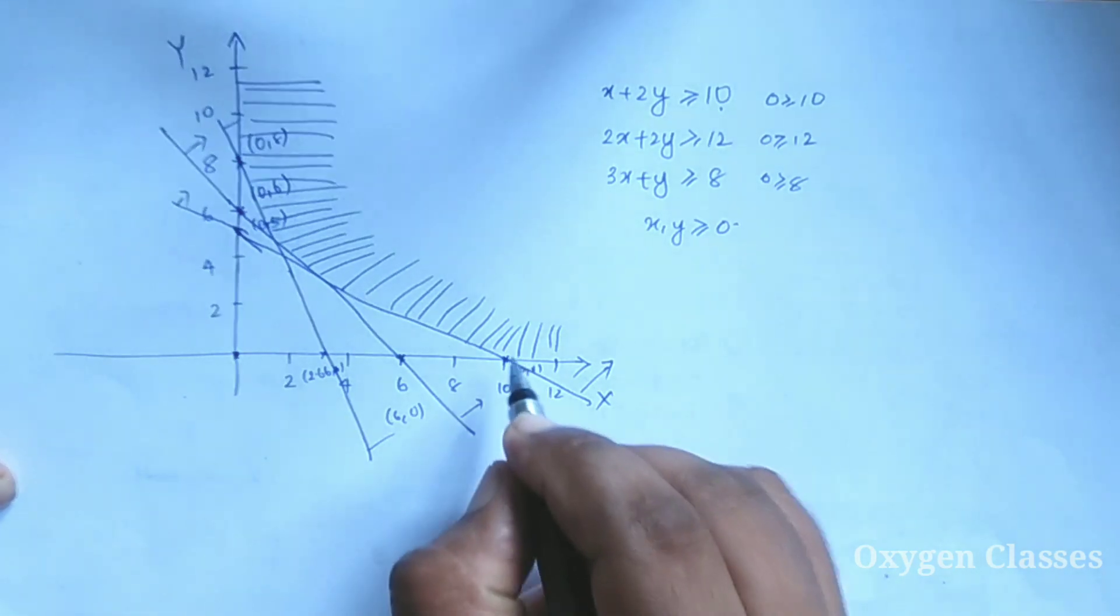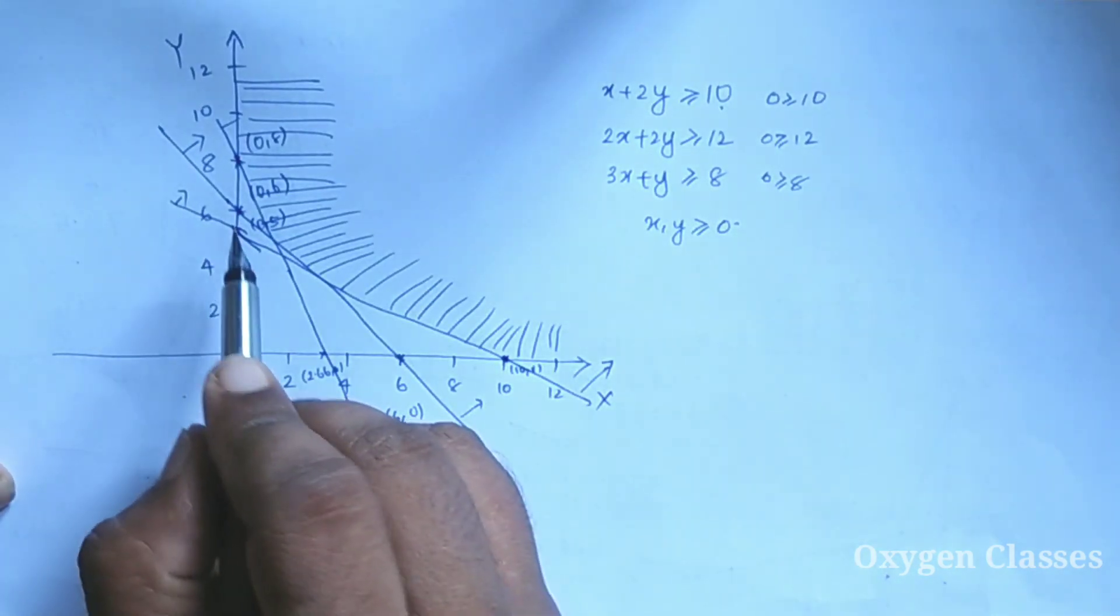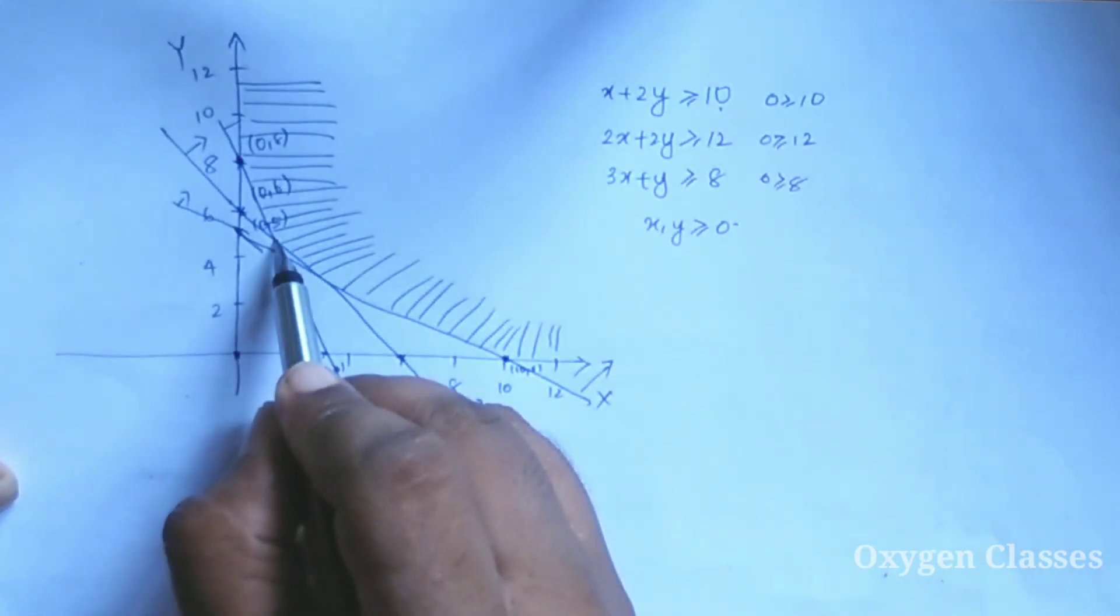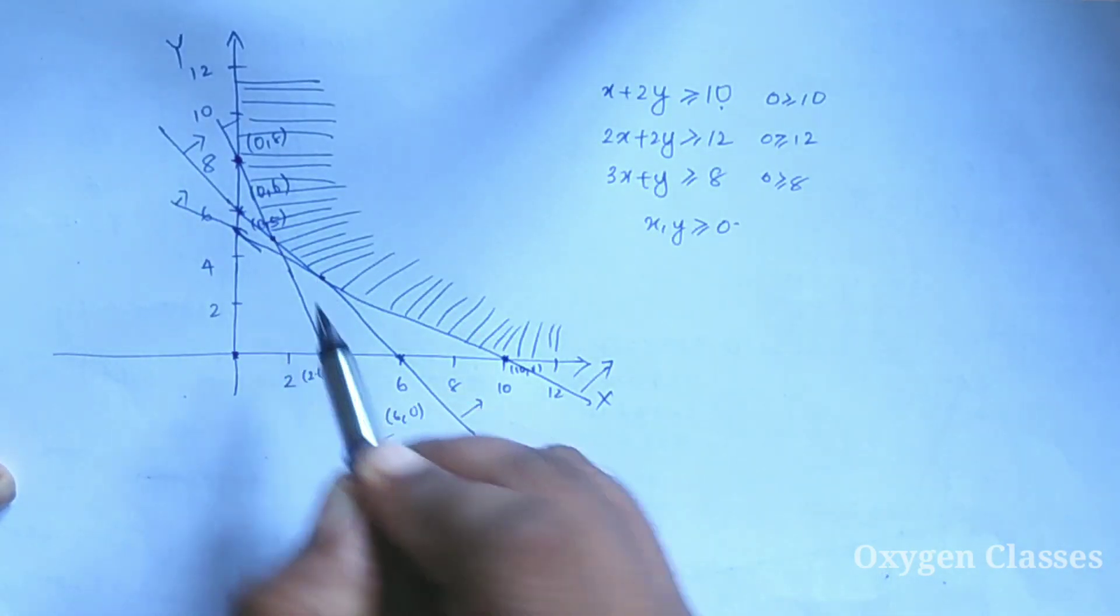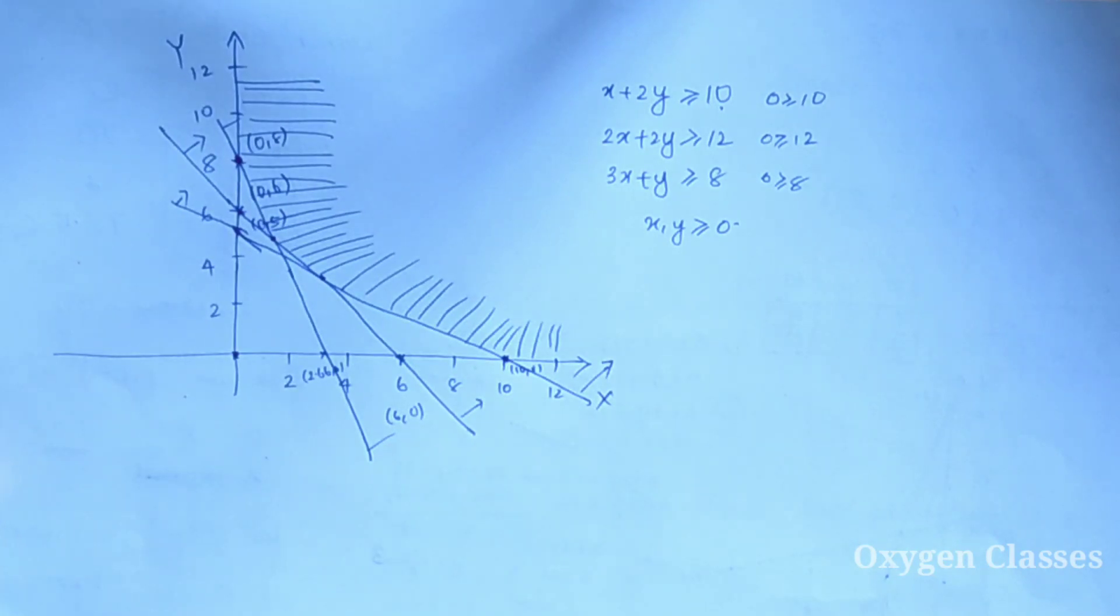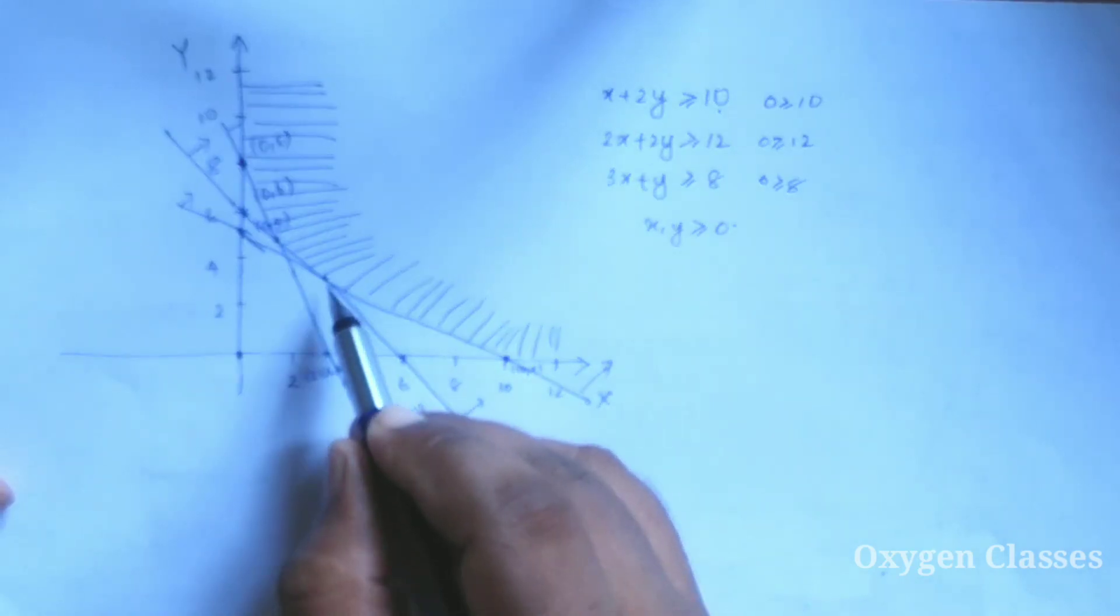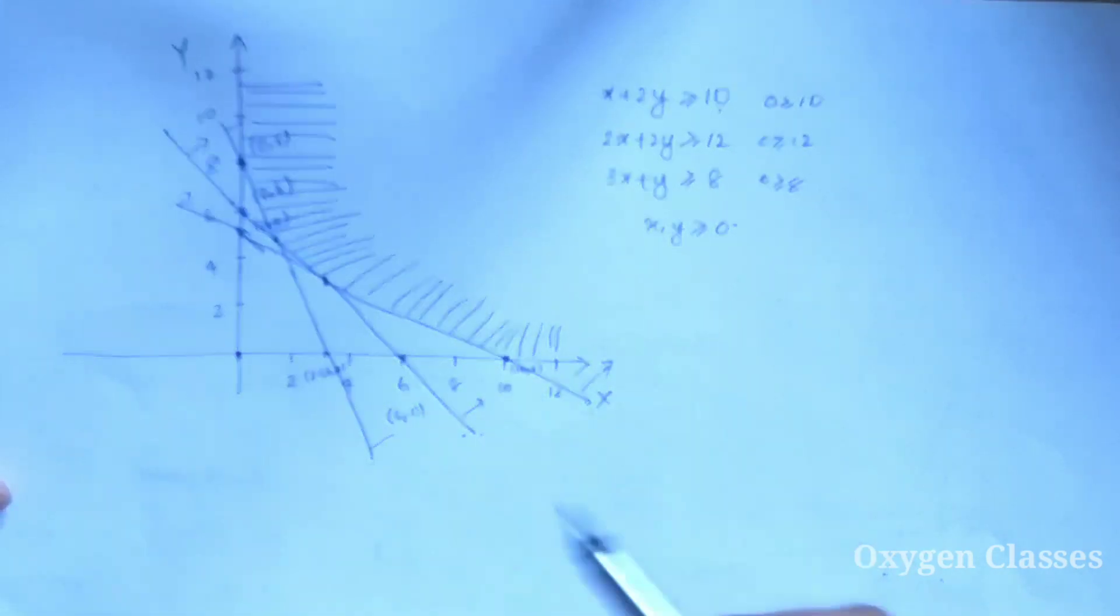The corner points are: one corner point is (10, 0), another corner point we need to find by solving two lines.